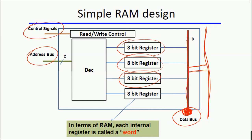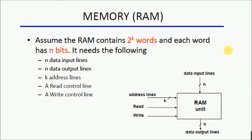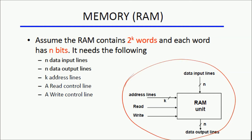This is a simple RAM design: it has a read/write control, an address bus to select which register inside the memory is accessed, and a data bus inside the RAM. The internal bus connects to the external bus through buffers, with data and address connections coming outside the memory box.